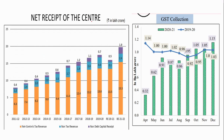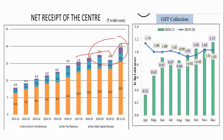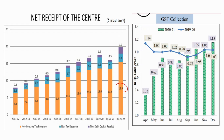Looking at net receipts of the center, receipts are increasing overall. In 2021 there was a decrease due to Covid, but in 2021-22 it is projected to increase again — showing a V-shaped recovery. You will see this V-shape pattern across all indicators, which is why there is so much focus on V-shaped recovery. The maximum receipt comes from net tax revenue.